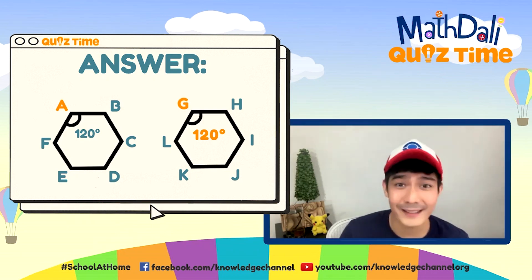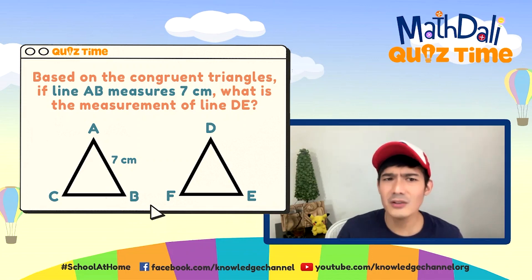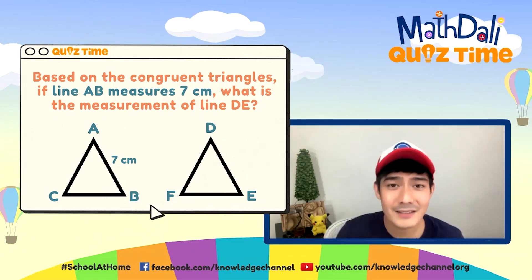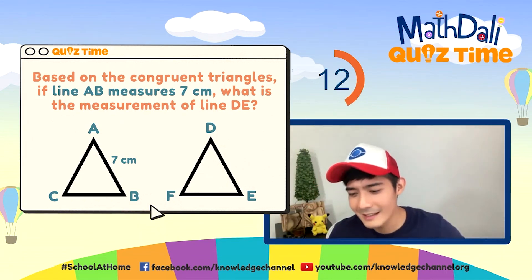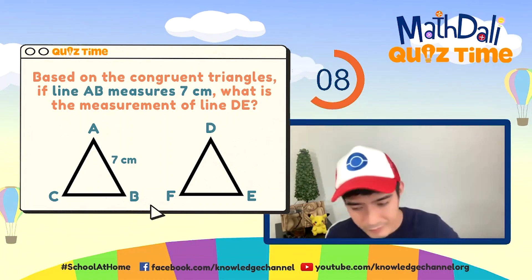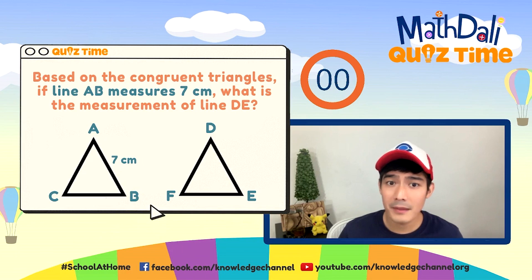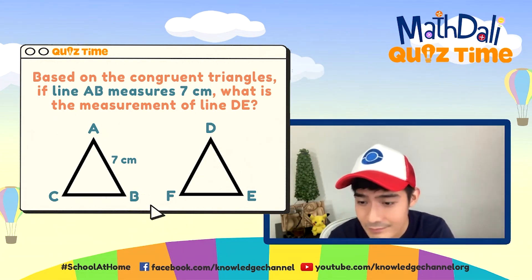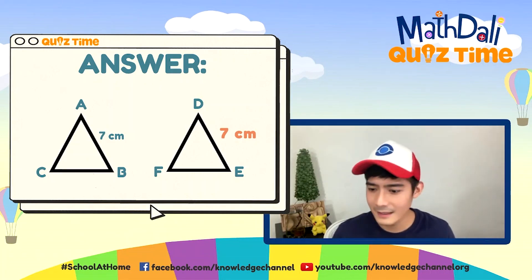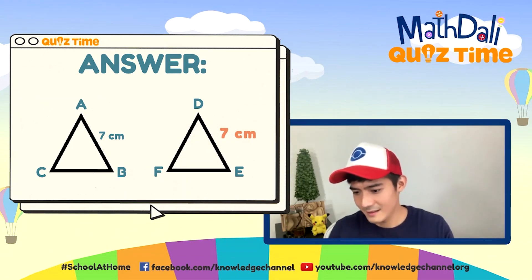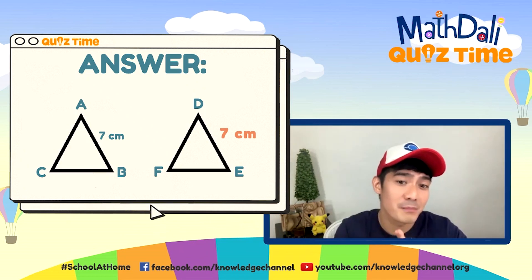Okay, let's have Question Number Five — the last one. Tandaan — last gym battle na natin to. Based on the congruent triangles, if line AB measures 7 centimeters, ano dapat ang measurement ng line DE? 20 seconds, go. Dapat 2 seconds lang, kayang-kaya na yan. By the way, if you wanna learn something about PEMDAS, go to our YouTube channel — it's a knowledge channel. The correct answer is 7. Dahil nga kung congruent polygons sila, alam natin na dapat pareho yung angles at pareho yung measurement ng kanilang sides.